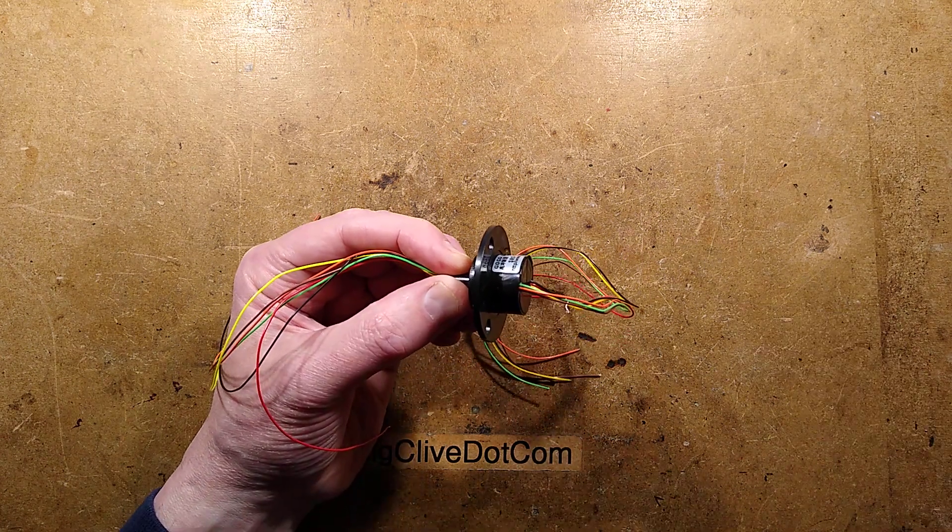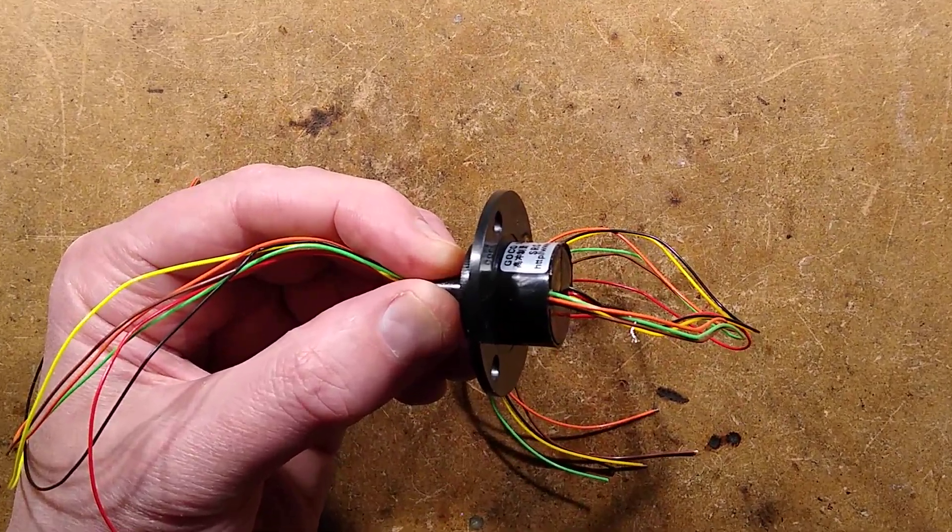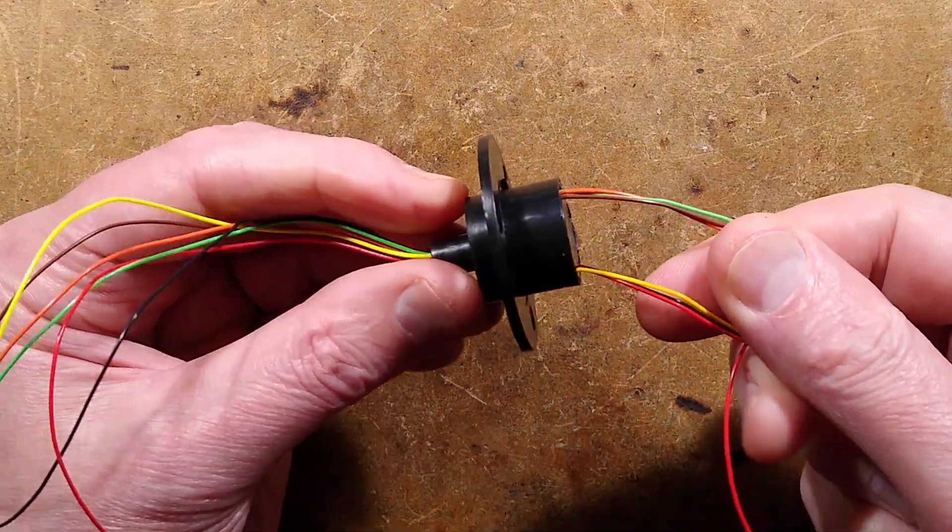Sometimes you have projects where you require rotating electrical contacts. Let me zoom down. This is an eBay slip ring assembly.